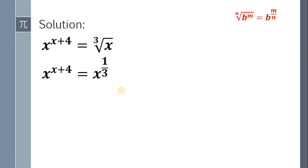Next, divide both sides by x raised to 1 third. And we get x raised to x plus 4 all over x raised to 1 third equals 1.